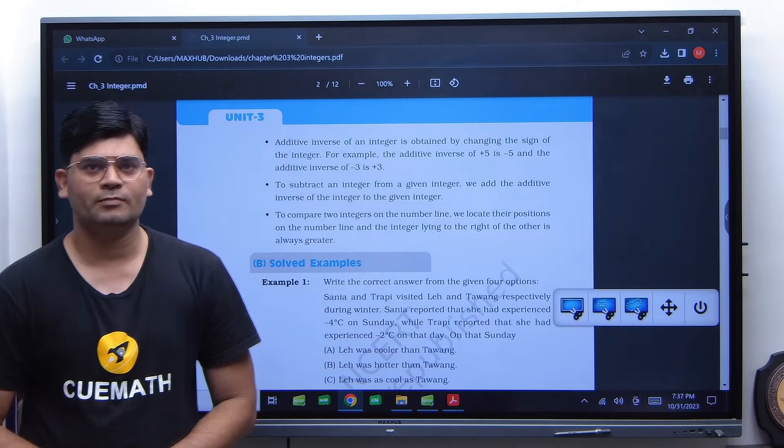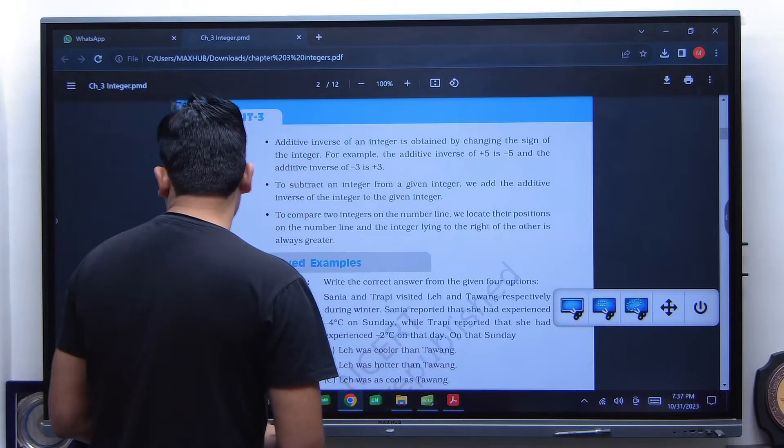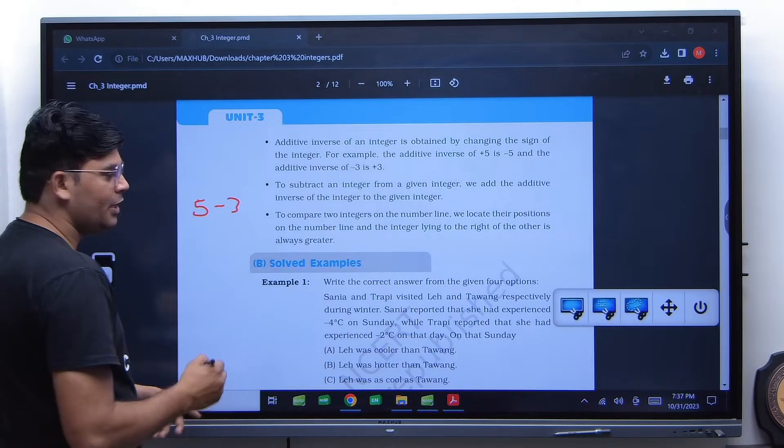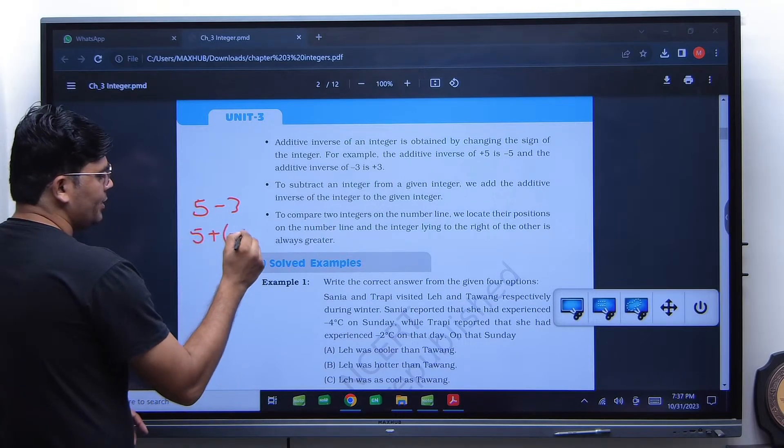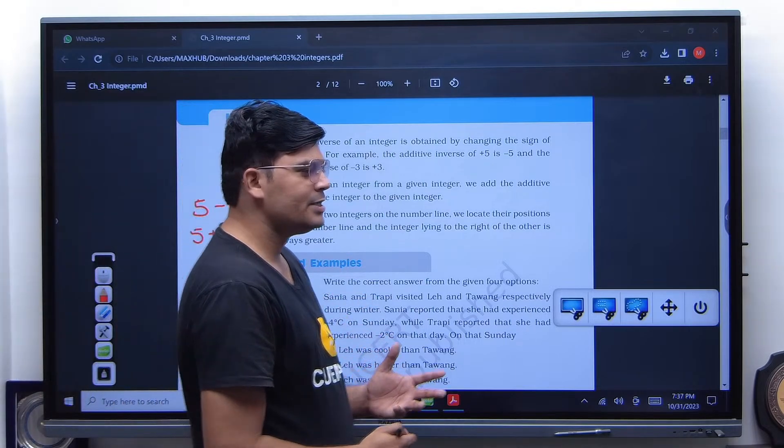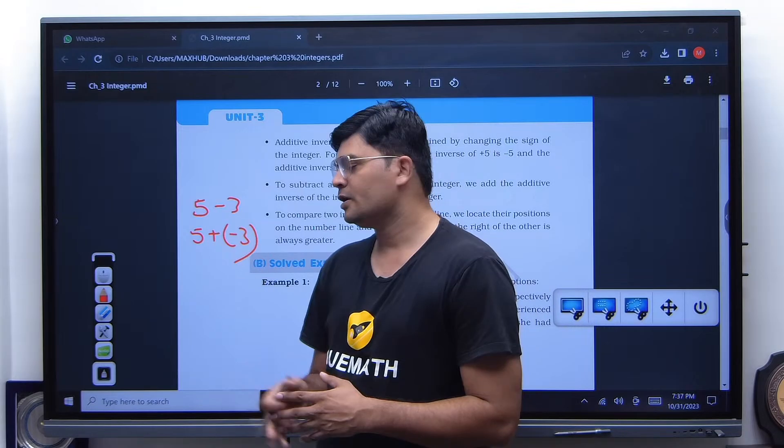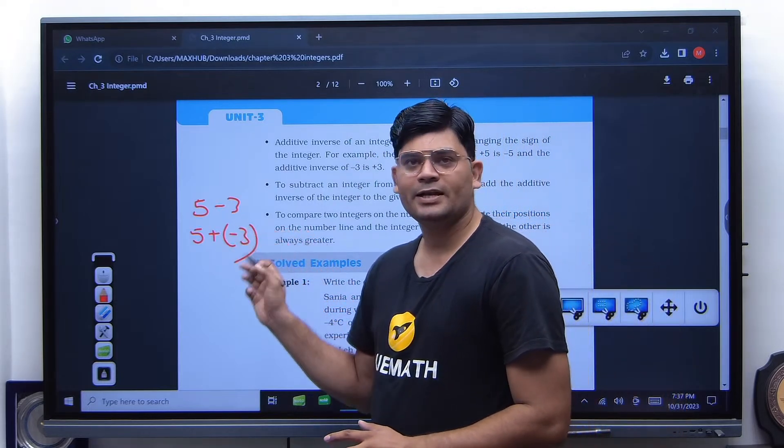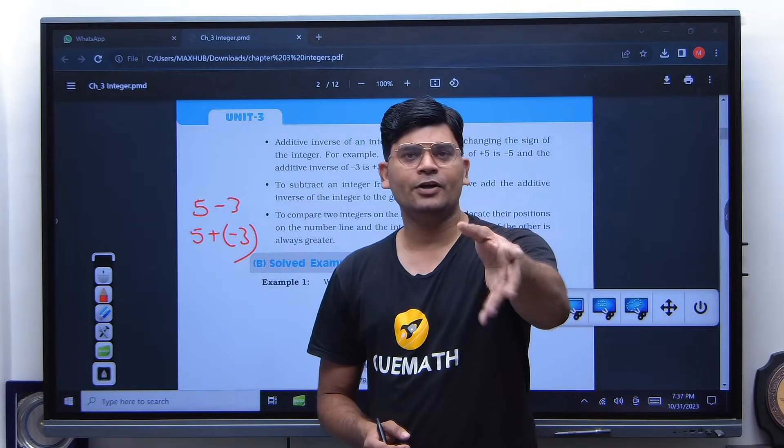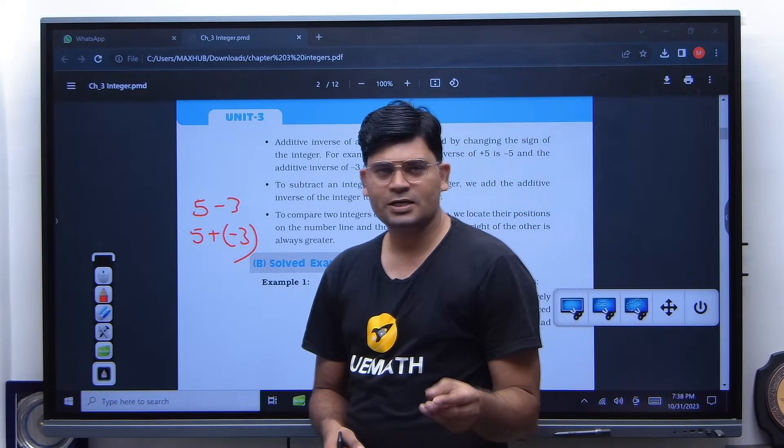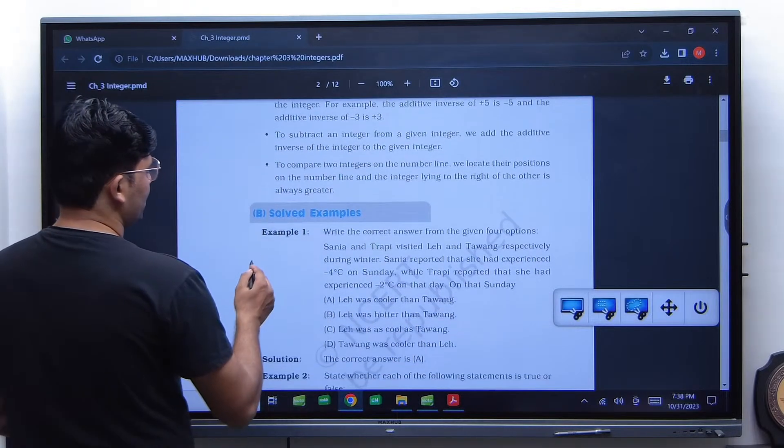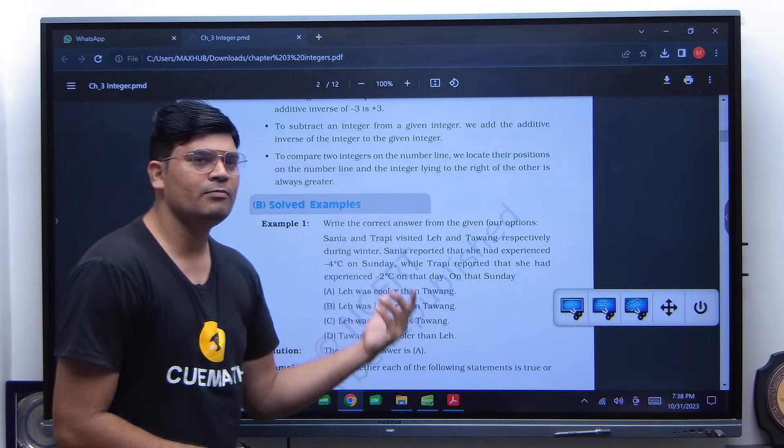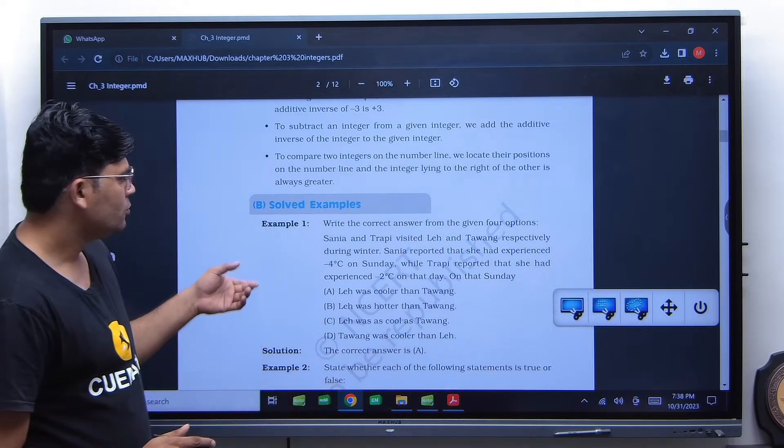There are two ways of saying it. If I say, one way is I can say 5 minus 3. The other way of saying it is I can say 5 plus minus 3. So the same thing has been said in two ways. We are paraphrasing here. 5 minus 3 means 3 subtracted from 5. And 5 plus minus 3 means negative of 3 is added to 5. Negative of 3 is added to 5. So these are the two things that we say. Same operation is being happening. To compare two integers on the number line, we locate their positions on the number line. In fact, which is on the right side is always greater.